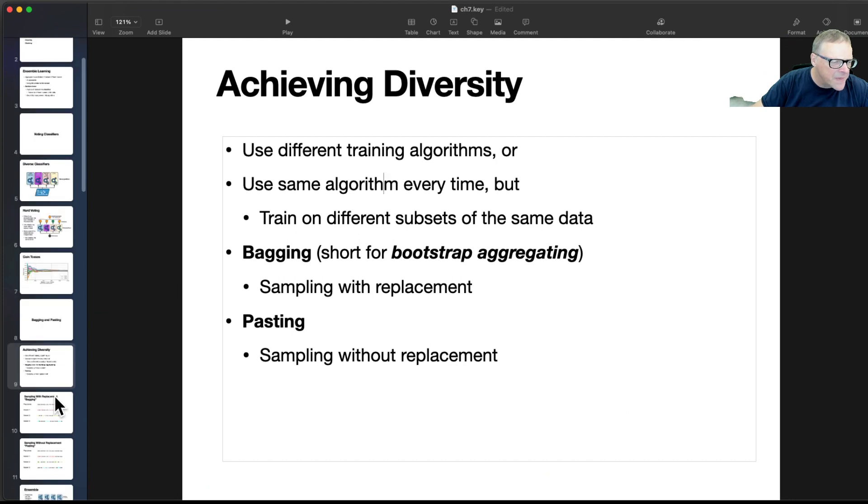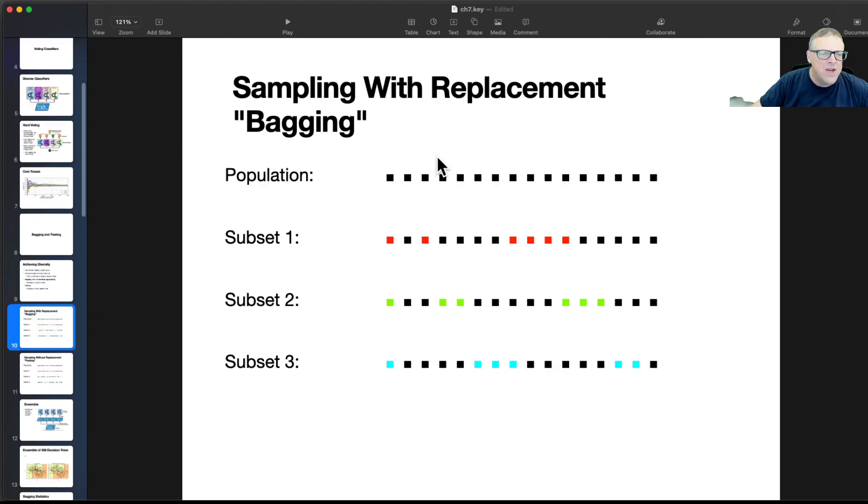And so bagging is sampling with replacement. So I have a population, and I'll sample some of them, and the next time I sample, I might get the same ones. The next time I sample, I again might get some of the same ones. In fact, if I sampled more, I might draw the same one twice. I pick this one, then I record it, then I throw it back in. And I might pick the same one twice when sampling, with replacement. That's bagging.